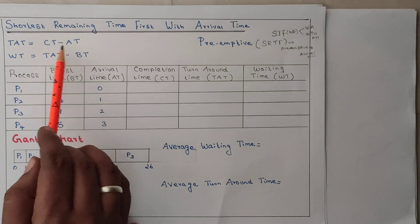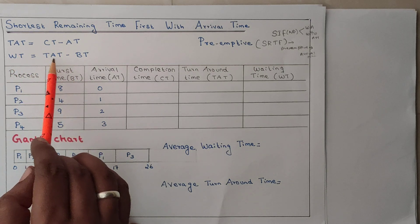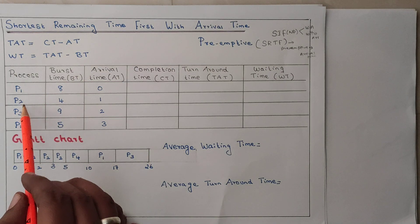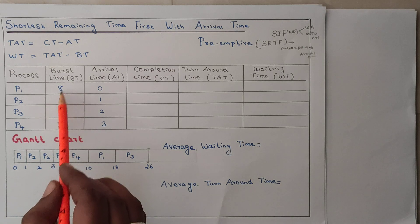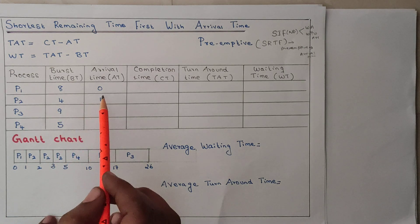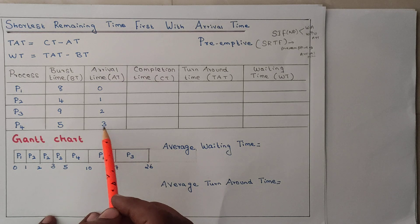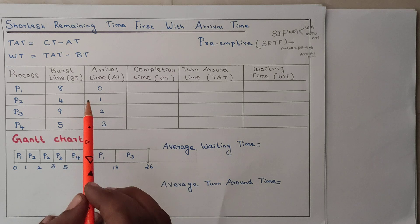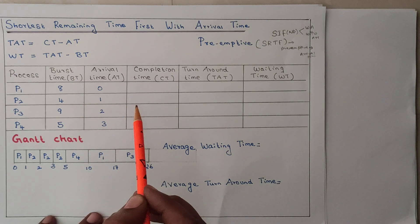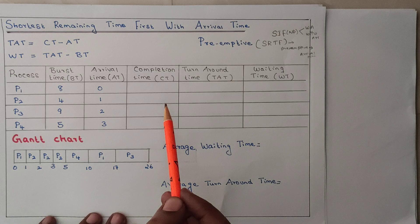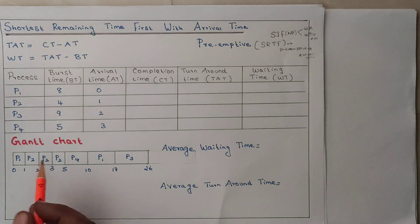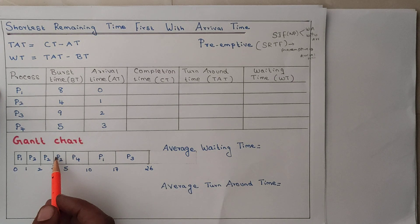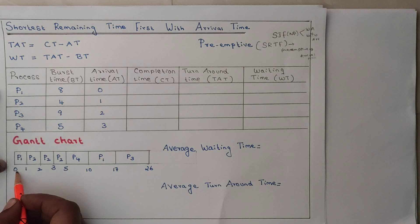Turnaround time equals completion time minus arrival time. Waiting time equals turnaround time minus burst time. Here there are four processes: P1, P2, P3, and P4, each with burst time and arrival time. Since it is a preemptive way, if any job is taken it may preempt and give control to another process. Now we will discuss the Gantt chart, which is very important for SRTF.